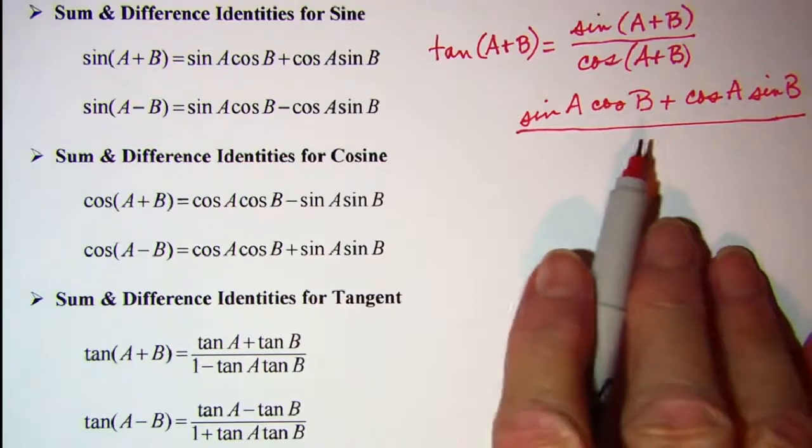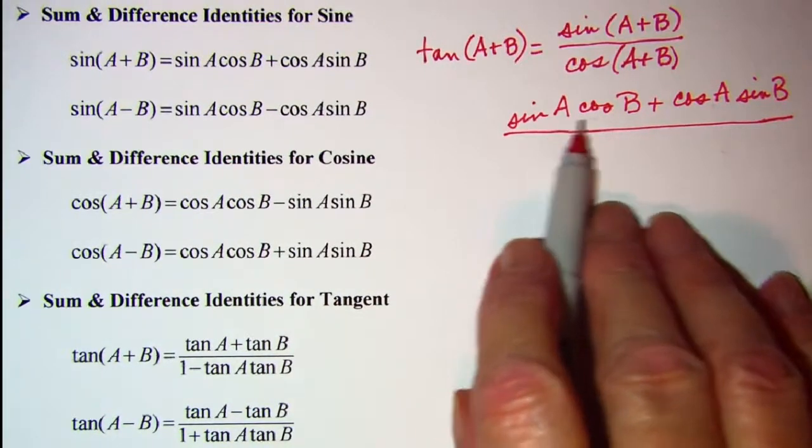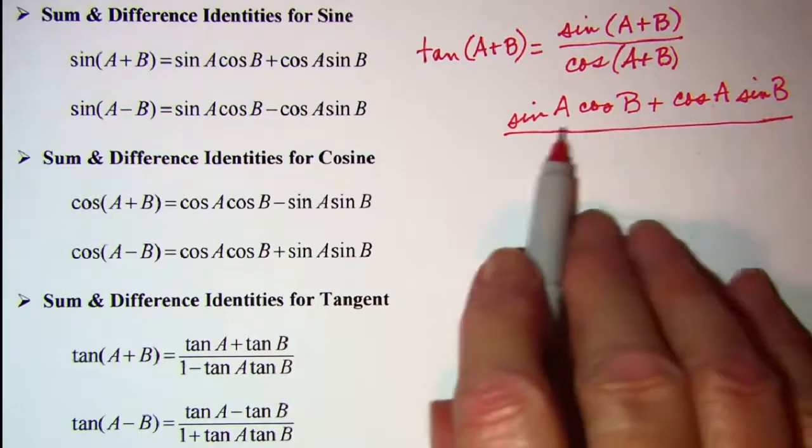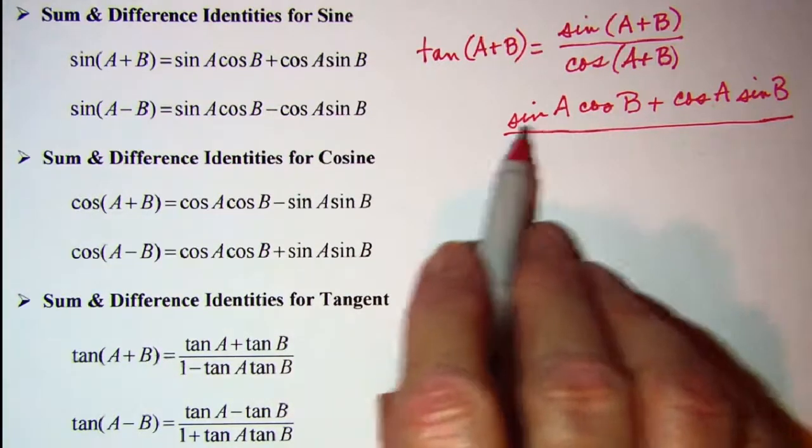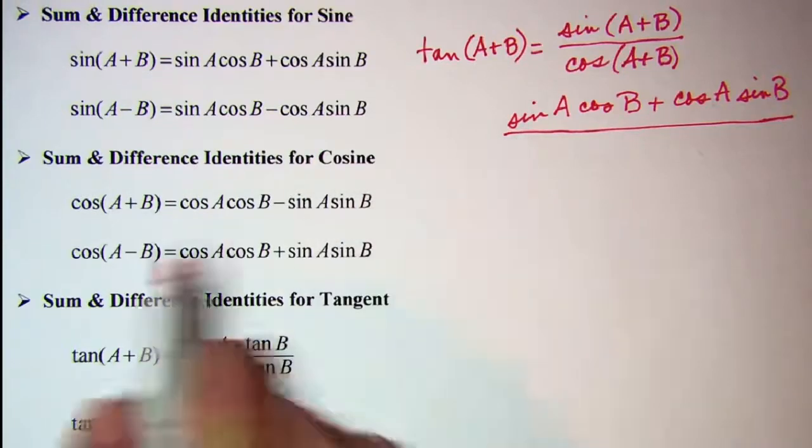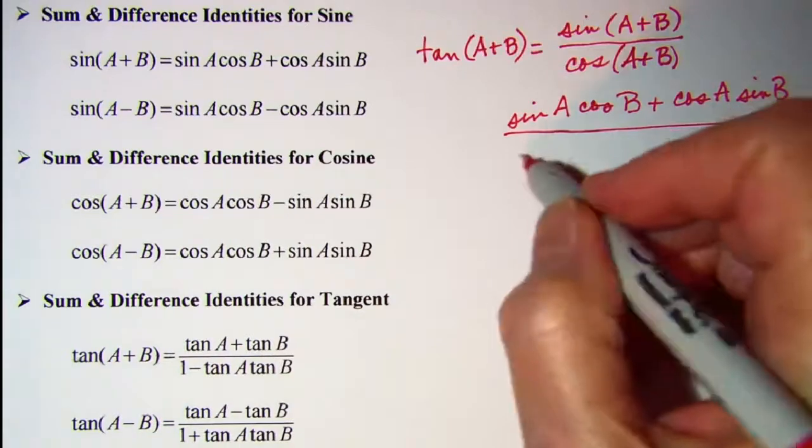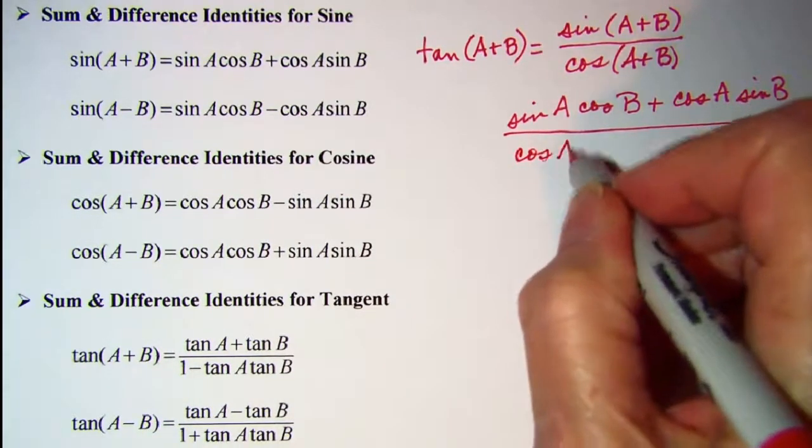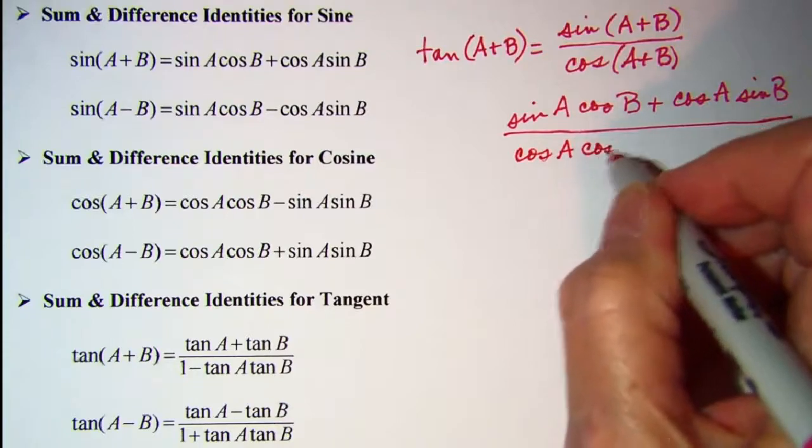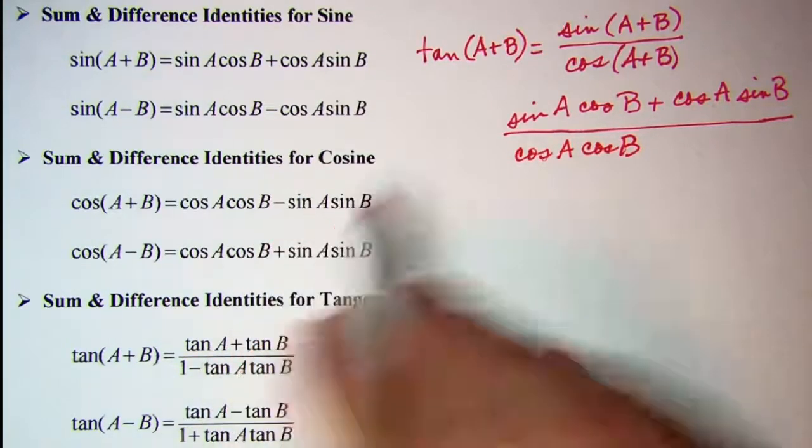And then in the denominator, I should have left a little bit more room under here. But that should be fine. I need the cosine of A plus B for the denominator. So cosine A cosine B minus sine A sine B.